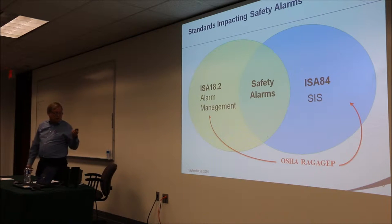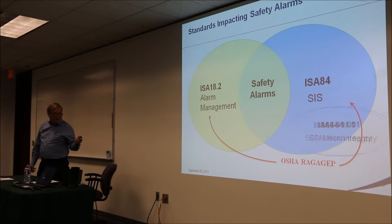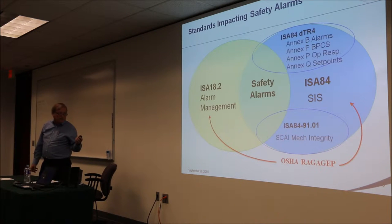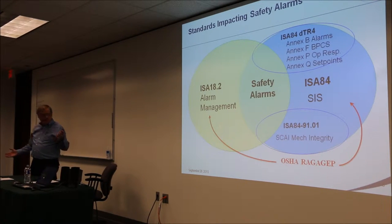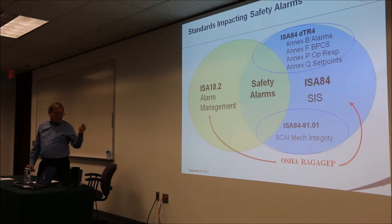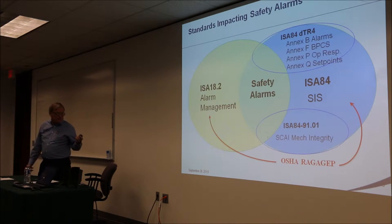That pretty much outlines where the intersection is for safety alarms, and there are requirements in both of those standards. But as we'll see, there are other documents that have very important requirements that don't appear in those two main standards, and that's the main thrust of my talk here today — the requirements appear across a number of different documents, and it might not be clear that you really have to be looking in these places to capture the whole picture.